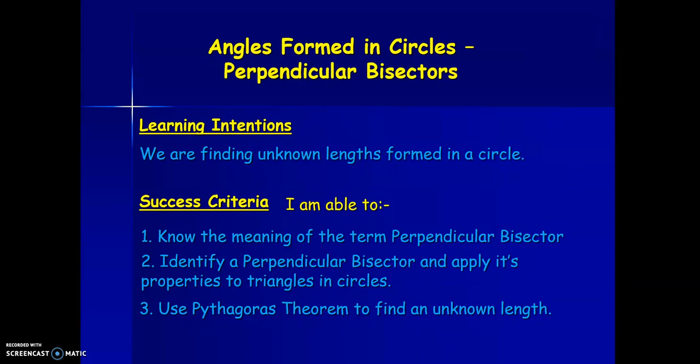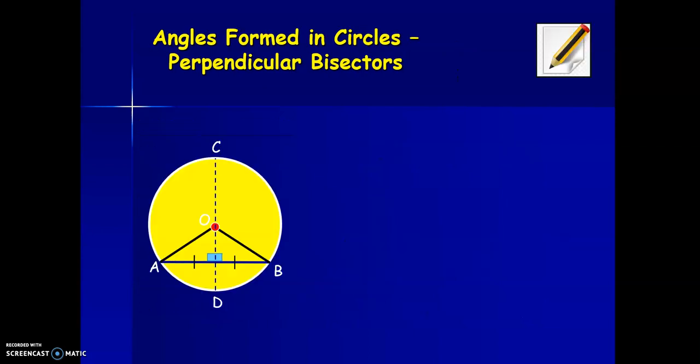So in today's lesson, we are finding unknown lengths formed in a circle. By the end of the lesson, we should know the meaning of the term perpendicular bisector, be able to identify a perpendicular bisector and apply its properties to triangles and circles, and use Pythagoras' theorem to find an unknown length.